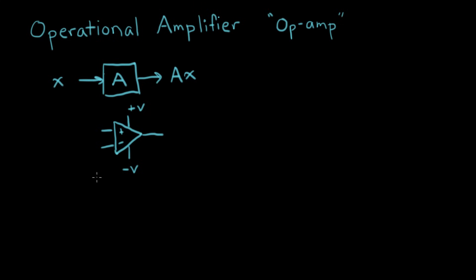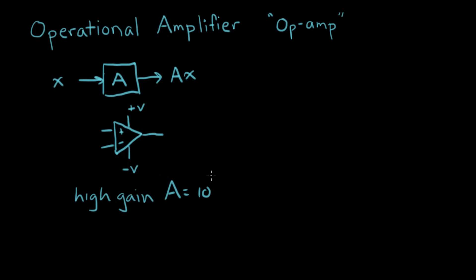When we say the word op amp, we have some specific properties in mind. One is that op amps have high gain. The gain, usually represented by the symbol A, is something like 10 to the fifth to 10 to the sixth — really, really high.